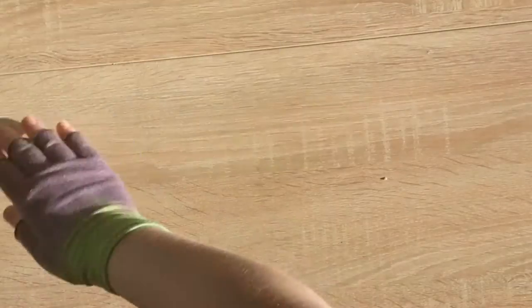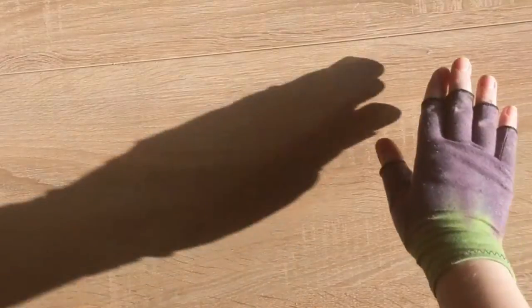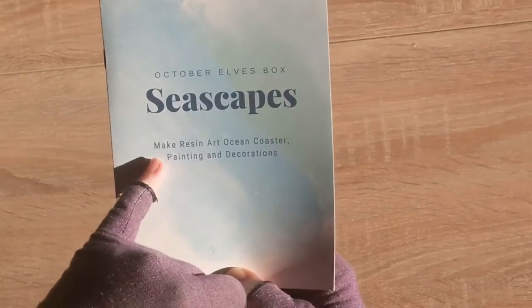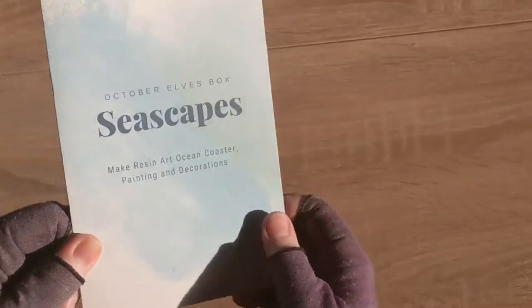Let's take a look inside. This is the Seascapes box - making resin art ocean coaster painting and decorations. So we'll take a look at that. I'm going to move the box over to this side.